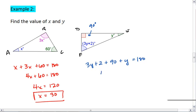By simplifying, we get 4Y plus 92 equals 180. 4Y equals 88. Y equals 22.